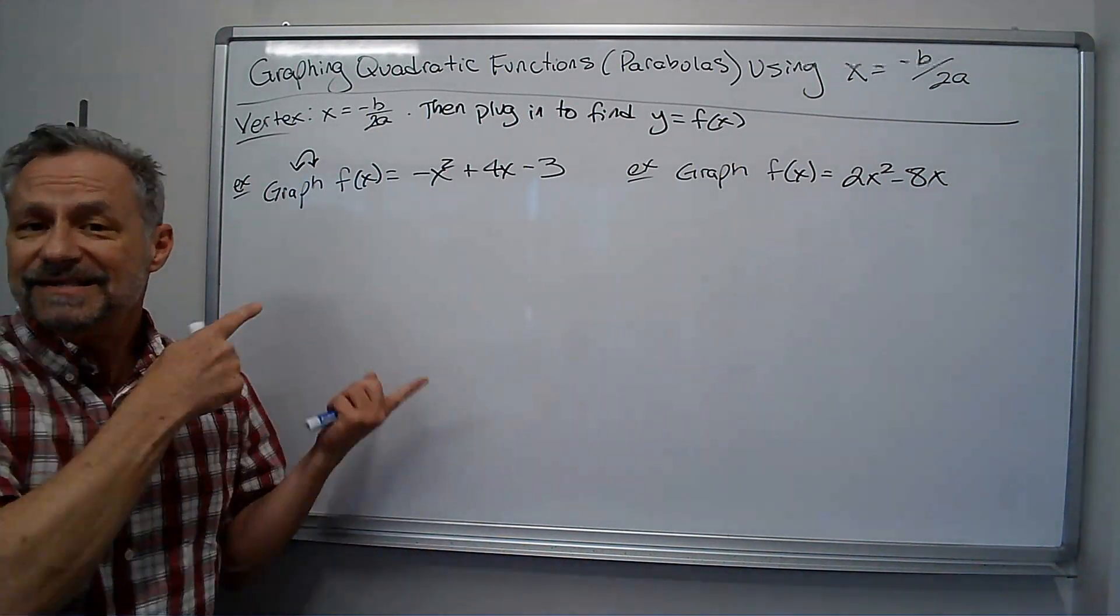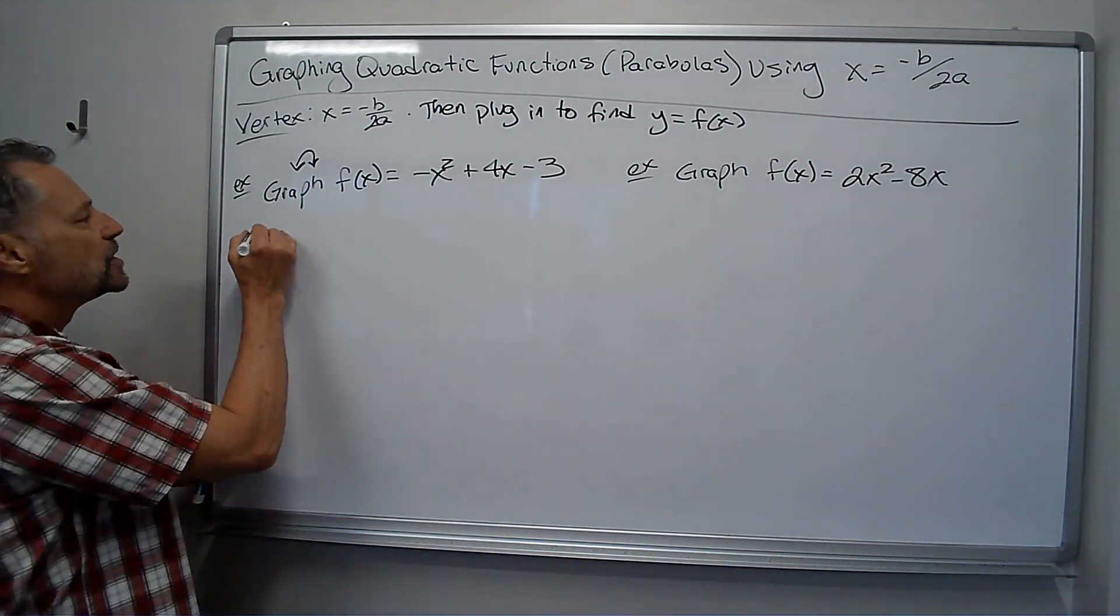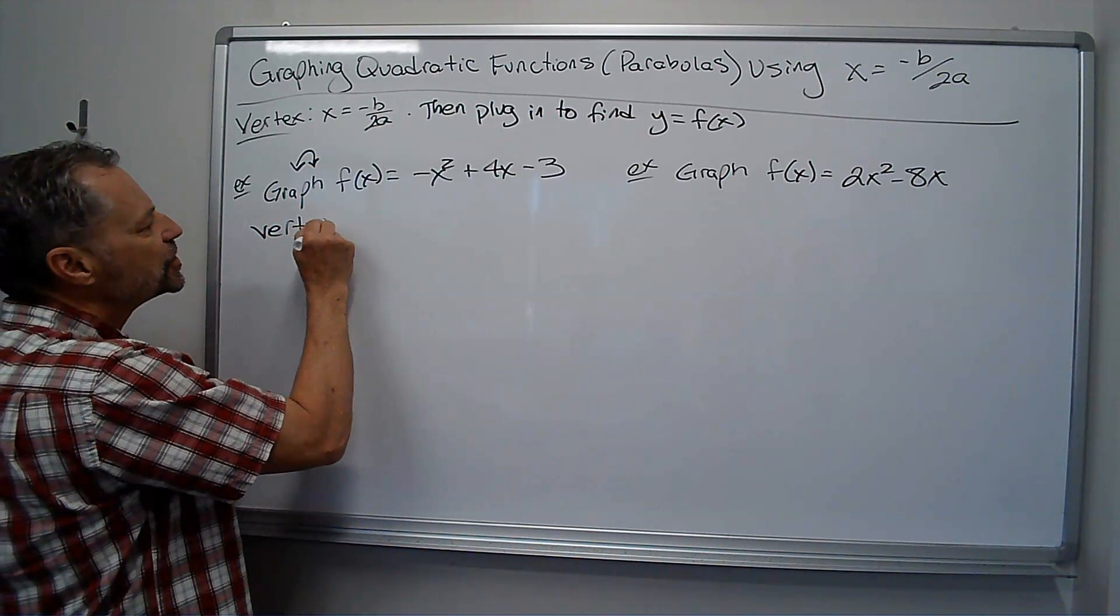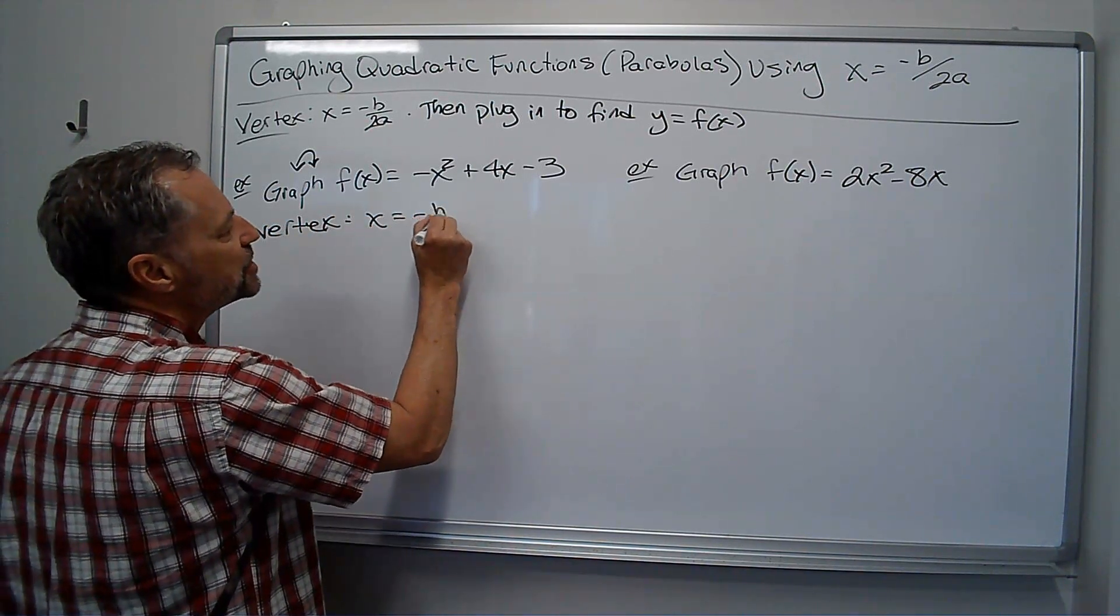I just need to find the vertex and then I can graph it. So for the vertex, we're going to use x equals negative b over 2a.